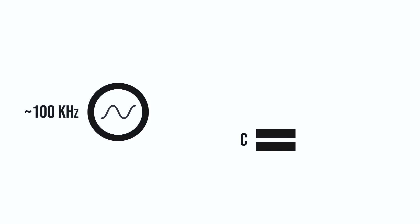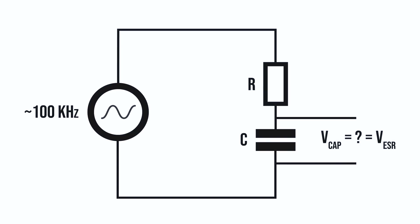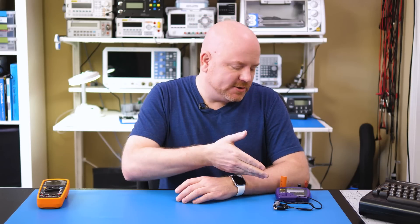The problem with this measurement is that the ohmmeter charges up the capacitor. To measure ESR, the capacitor needs to stay discharged. So to do that, ESR meters use an AC voltage with a frequency of around 100 kHz. Basically, they apply an AC signal to a voltage divider that contains the capacitor and then measure the voltage drop of the capacitive element, which is mostly due to the ESR. For more information, check out the show notes on Element 14. Let's go check out the ESR meter.